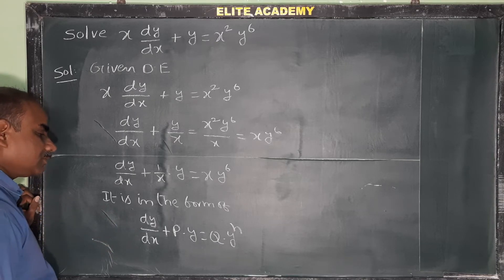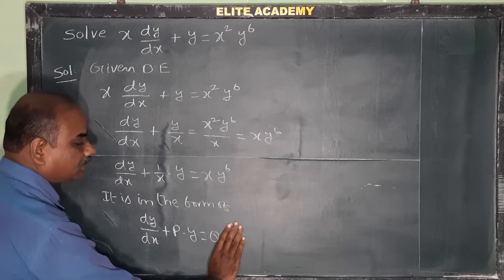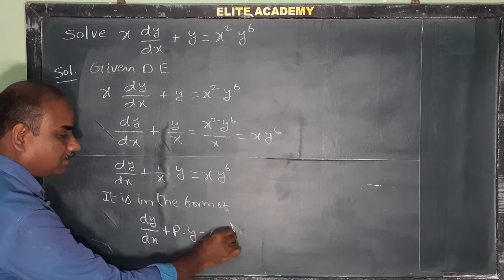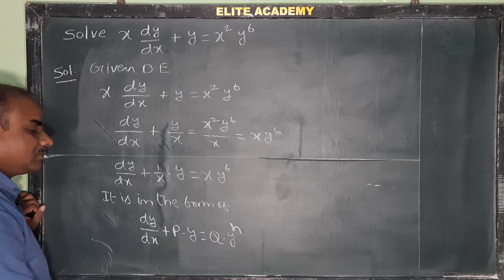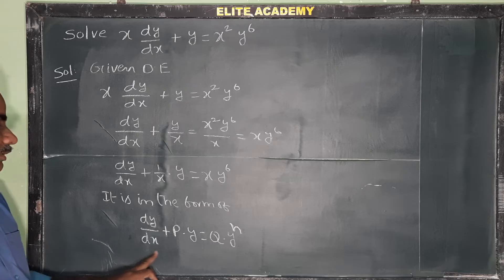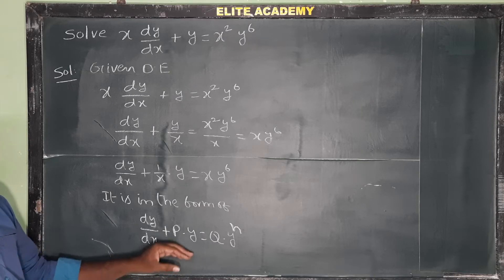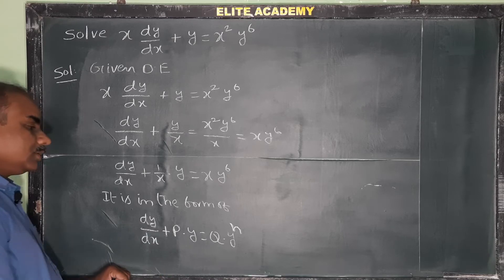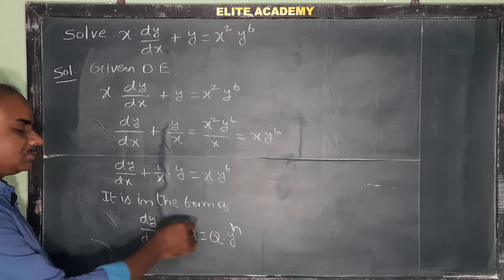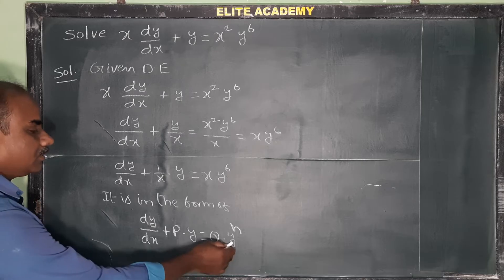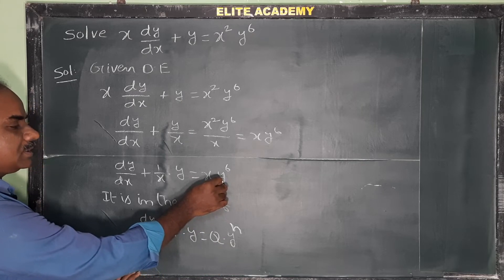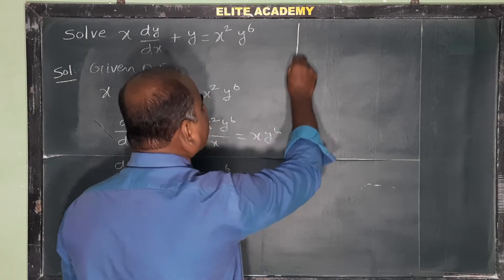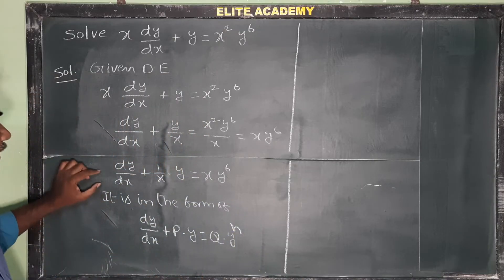We need to reduce this Bernoulli differential equation in terms of y into a linear differential equation in terms of y. To do this, we divide the entire equation by y⁶.